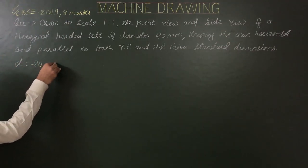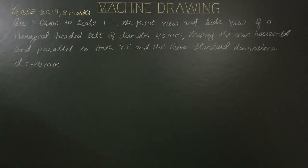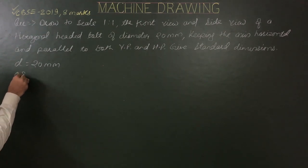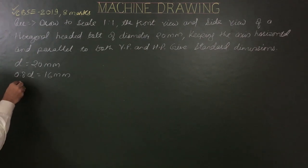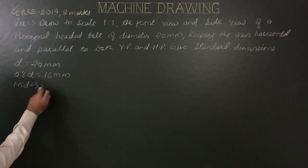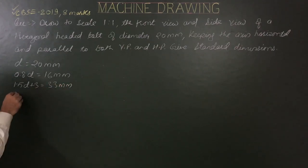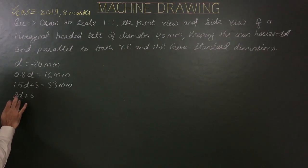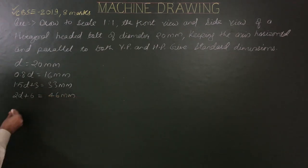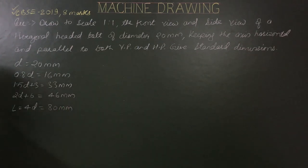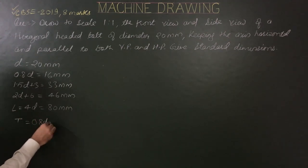The given diameter is 20mm. Based on D = 20mm, we calculate all standard dimensions: 0.8D = 16mm; 1.5D + 3 = 33mm; 2D + 6 = 46mm (threaded length); and the length of the bolt equals 80mm. Capital T, the bolt head thickness, also equals 0.8D = 16mm.